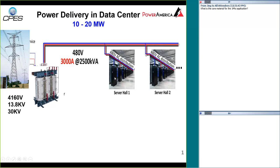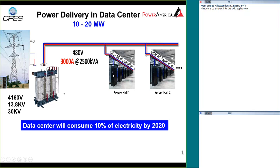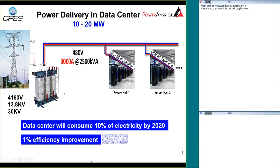There is a loss in the cable. In the data hall you have 480 volt three-phase AC and want to distribute it to the cabinet level. The server cabinet can only take single phase. Now keep in mind: data centers will consume 10% of electricity by 2020. One percent improvement in efficiency means 16 terawatt hours — 16 × 10¹² watt hours. Every bit of power dissipated in the air requires air conditioning to cool it, so multiply that by a factor of two.